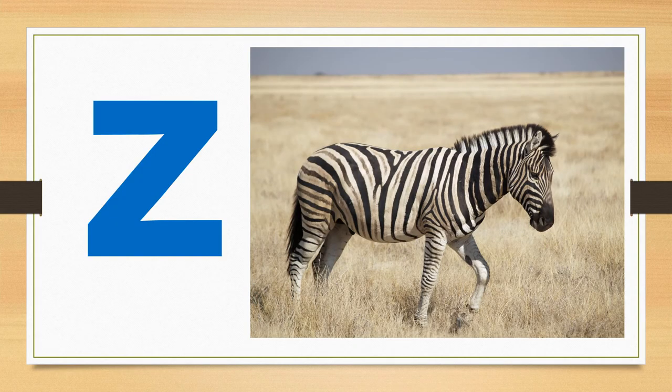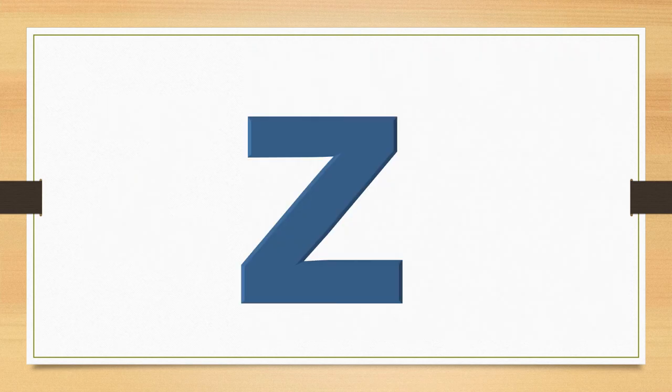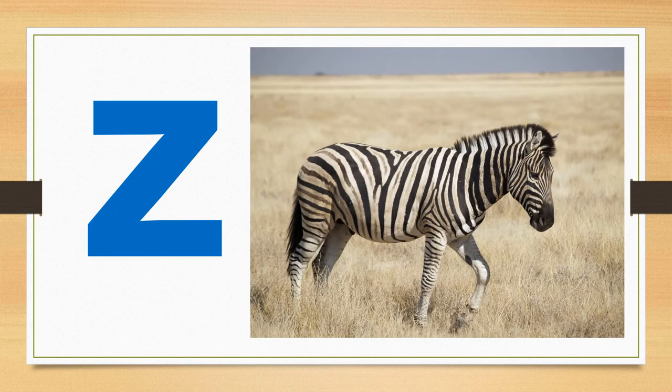This is the lowercase letter Z. The letter Z says Z. Z. Zeppelin. The word zebra starts with the sound Z. Ze. Zebra. Z. What sound does the letter Z make? The letter Z says Z.